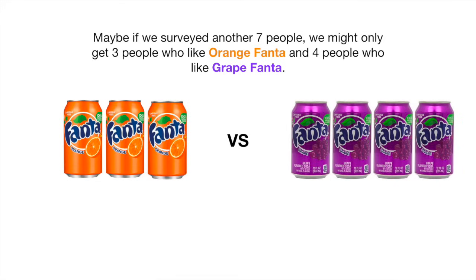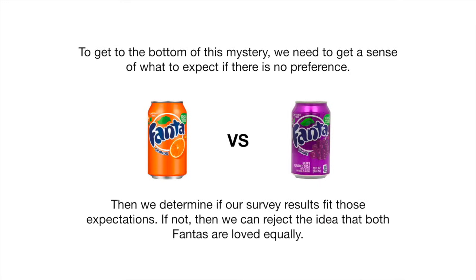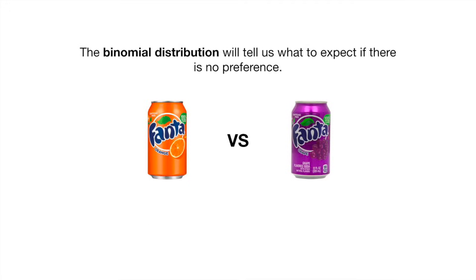Maybe if we surveyed another seven people, we might only get three people who like orange Fanta and four people who like grape Fanta. To get to the bottom of this mystery, we need to get a sense of what to expect if there is no preference. Then we determine if our survey results fit those expectations. If not, we can reject the idea that both Fantas are loved equally. The binomial distribution will tell us what to expect if there is no preference.